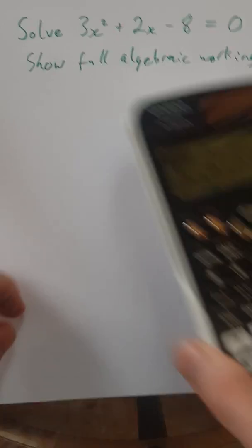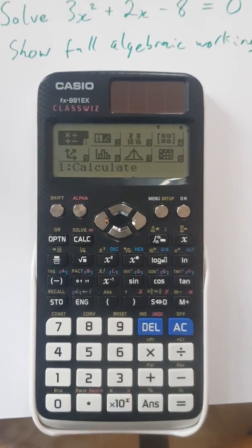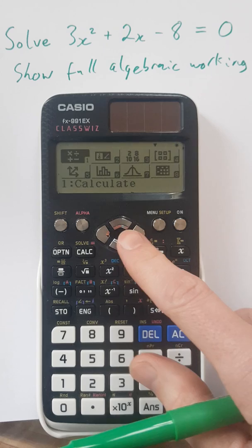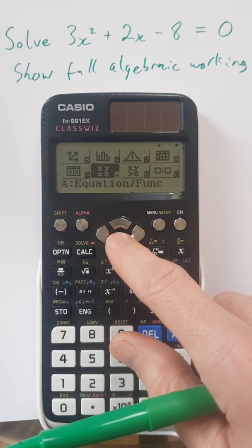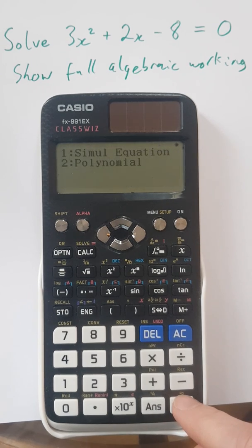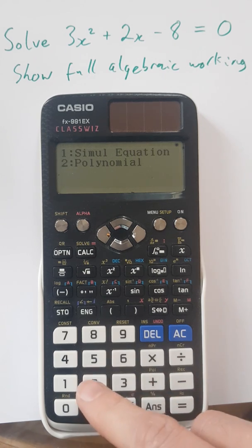You grab your ClassWiz, and we're going to go to the equation function solving feature. Press equals to go into that part of the menu. It's a polynomial. That just means it's clearly not simultaneous equations we're solving. It's polynomial.